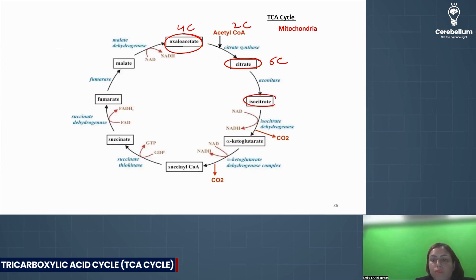Then we get isocitrate. 6 carbon isocitrate to 5 carbon alpha-ketoglutarate. From 5 to 4 carbon succinyl CoA. So carbon dioxide is lost in both of these steps.